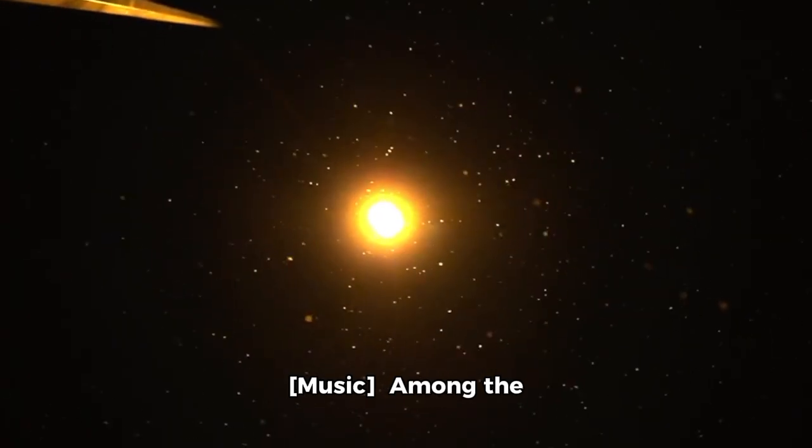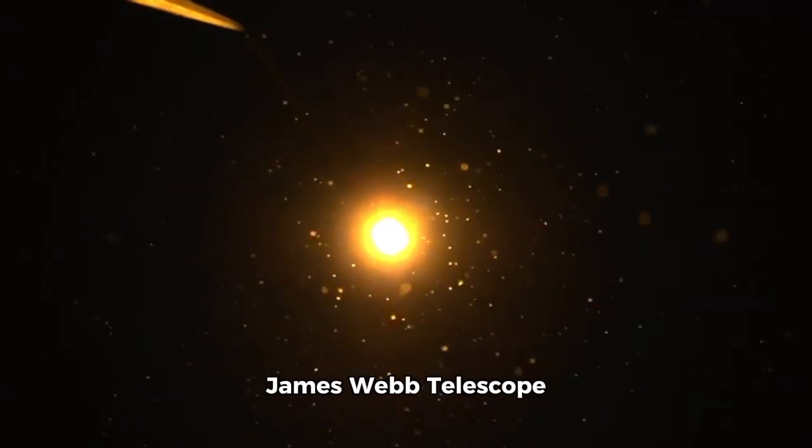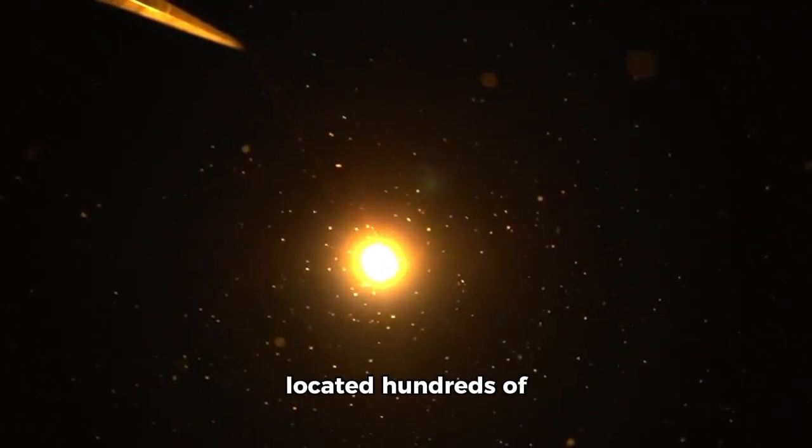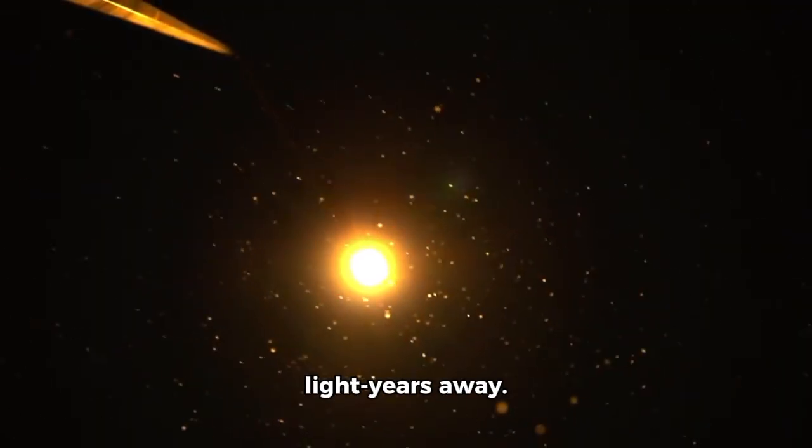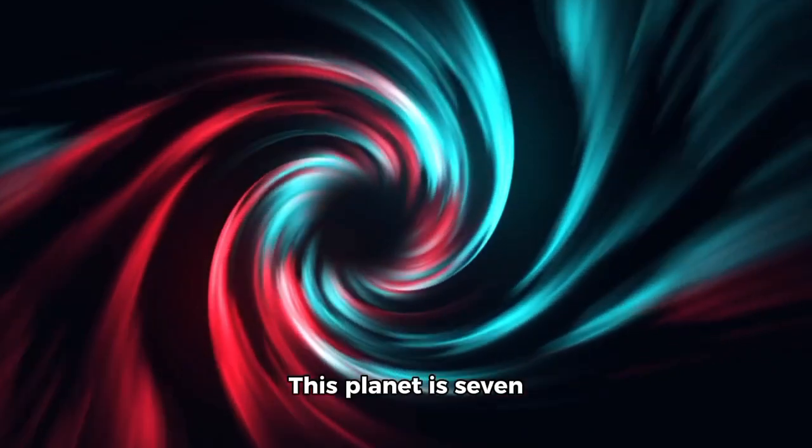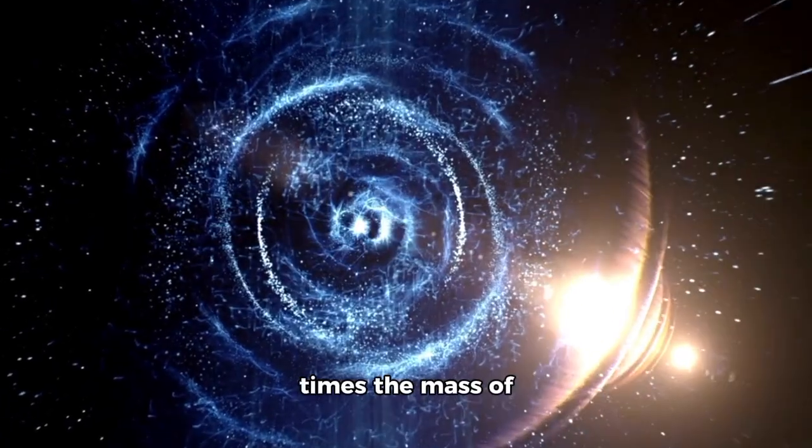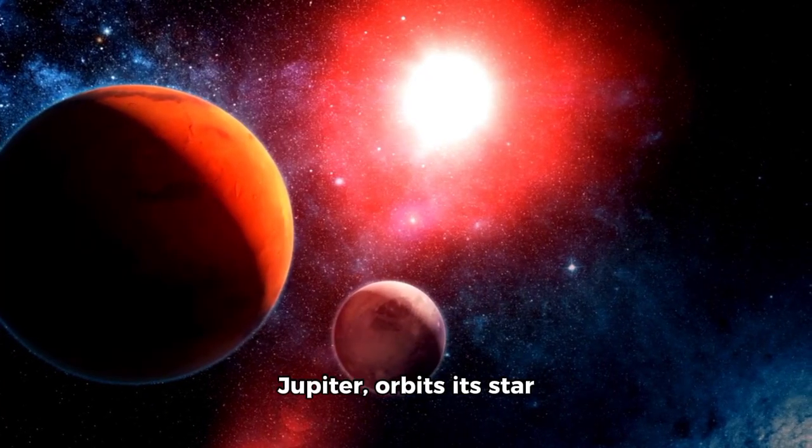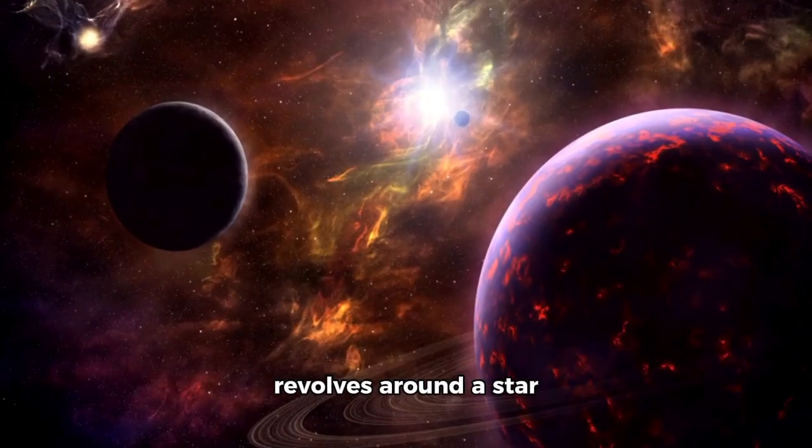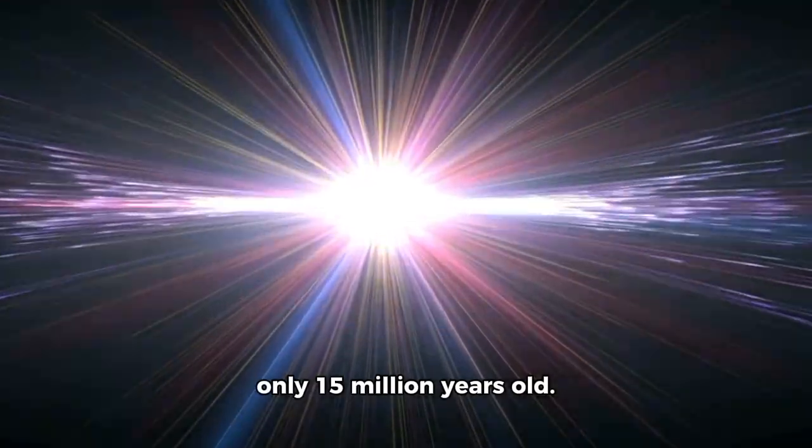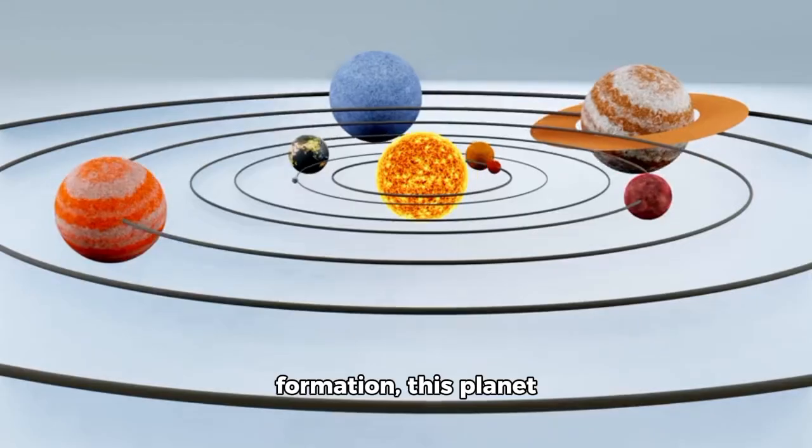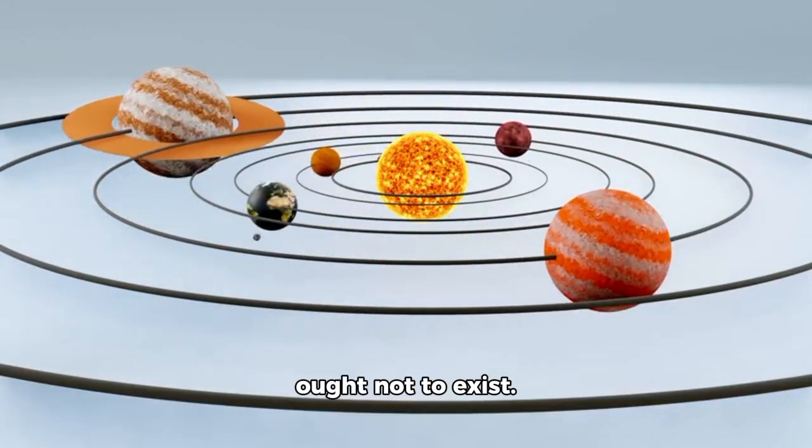Among the many targets of the James Webb Telescope was an exoplanet named HIP 65426b, located hundreds of light-years away. And what it revealed left astronomers speechless. This planet is seven times the mass of Jupiter, orbits its star at three times the distance of Neptune, and revolves around a star only 15 million years old. Based on all existing hypotheses of planetary formation, this planet ought not to exist.